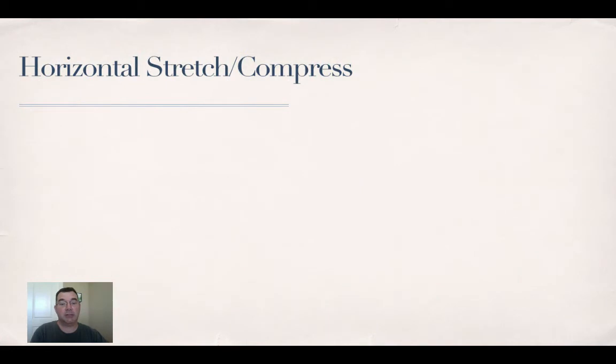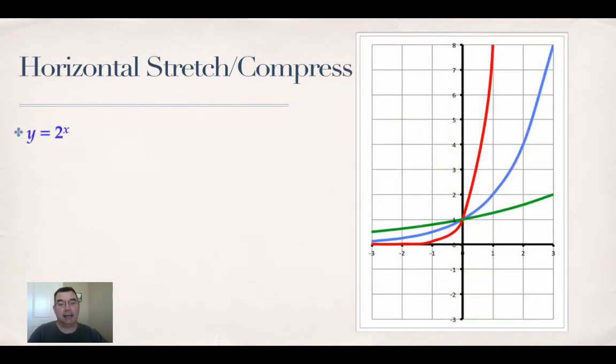If I want to do the same thing horizontally, then again, there's the blue one. It's y equals 2 to the x. Now to create the red one, what I did was I multiplied the exponent by 3, so that actually makes it a little steeper. And then to get the green one, which is not as steep, I divided the exponent by 3. So what you can tell is if I want to compress it, I actually have to multiply the exponent by something, and if I want to stretch it horizontally, I've got to divide the exponent by something. So again, since we're dealing with x, it's the opposite of what you think it would be.